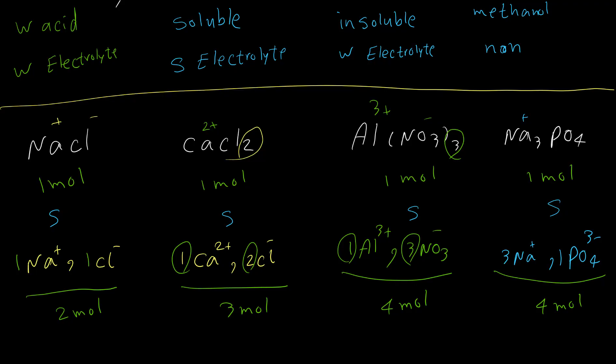So among these four compounds, sodium chloride has the lowest conductivity with 2 moles of ions, while aluminum nitrate and sodium phosphate have the highest conductivity with 4 moles of ions each.